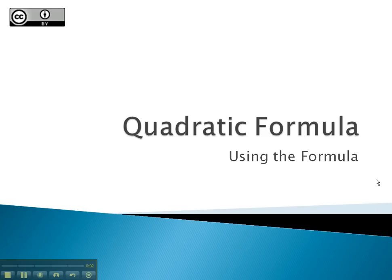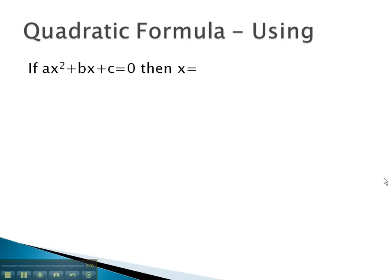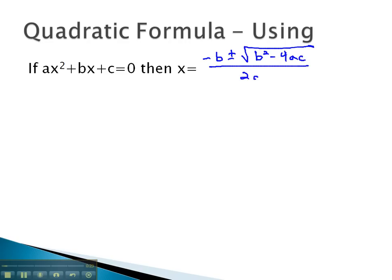In this video, we will look at how we can use the quadratic formula in order to solve equations. This quadratic equation, ax squared plus bx plus c equals 0, we found by completing the square has the solution x is equal to the opposite of b, plus or minus the square root of b squared minus 4ac, all over 2a. By committing this formula to memory, we can quickly solve quadratic equations.